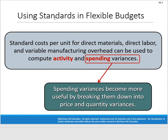In terms of using standards with flexible budgets: in Chapter 9 we broke down variances into activity variances and spending variances. Here in Chapter 10, we take those spending variances and make them more specific and useful by breaking them down into price and quantity variances. Ultimately, we're trying to drill down and find out why we're missing the mark and what we can do about it — how we can make our company run better.